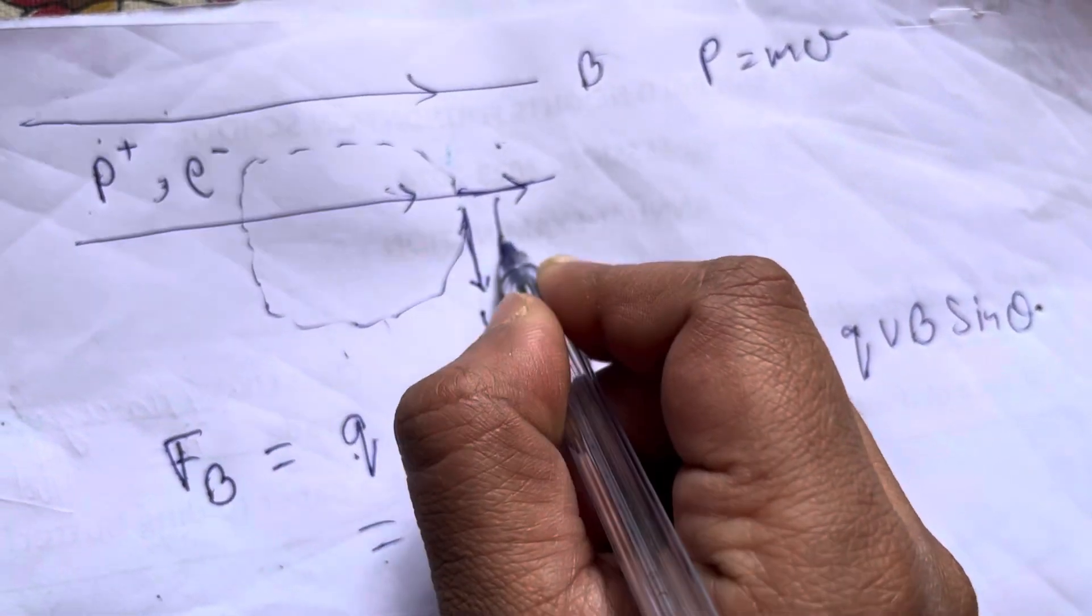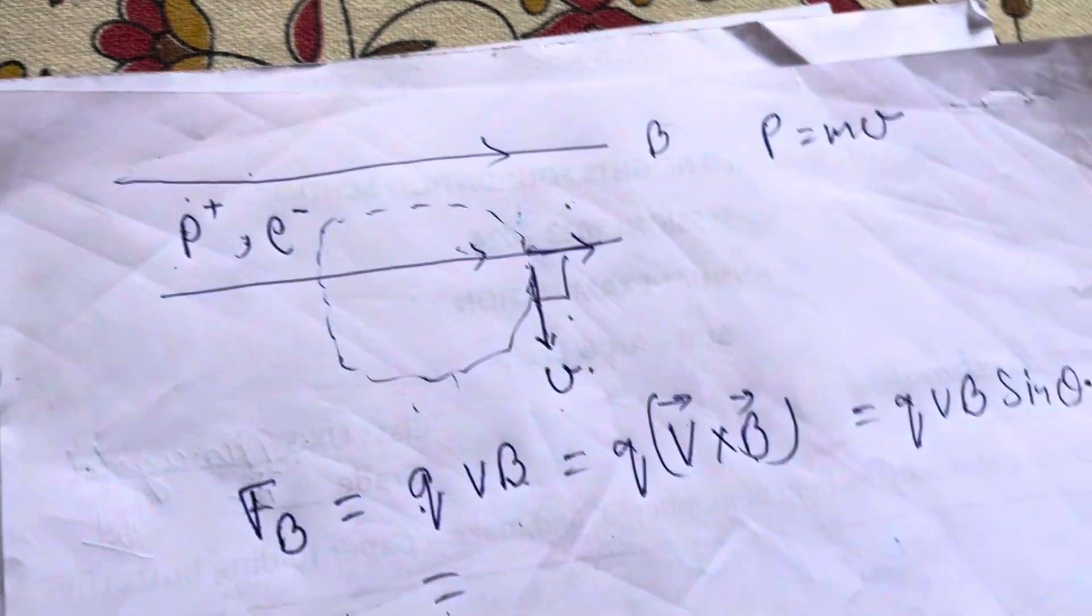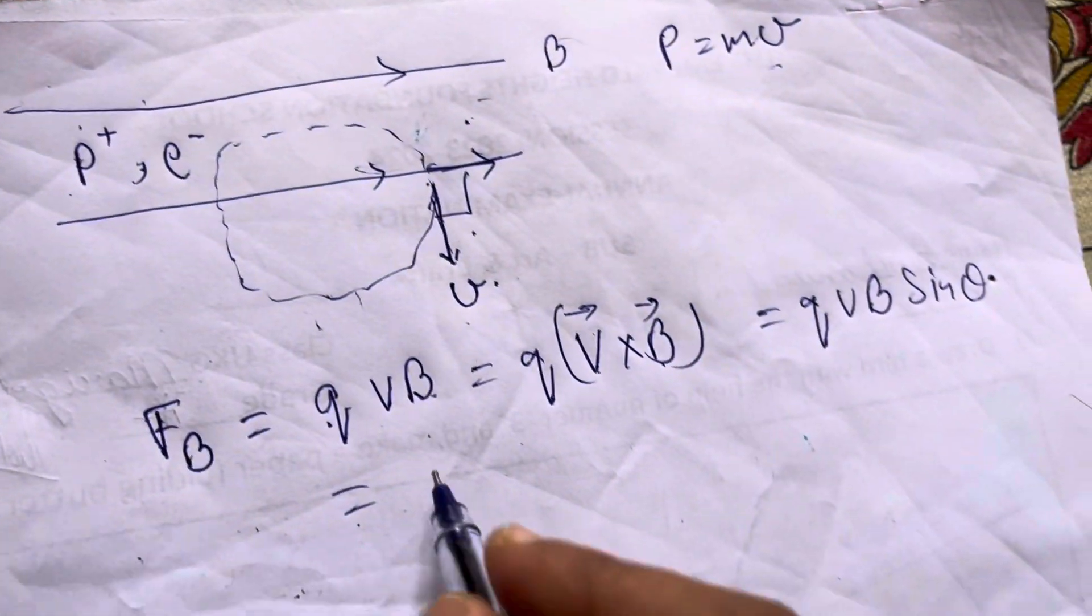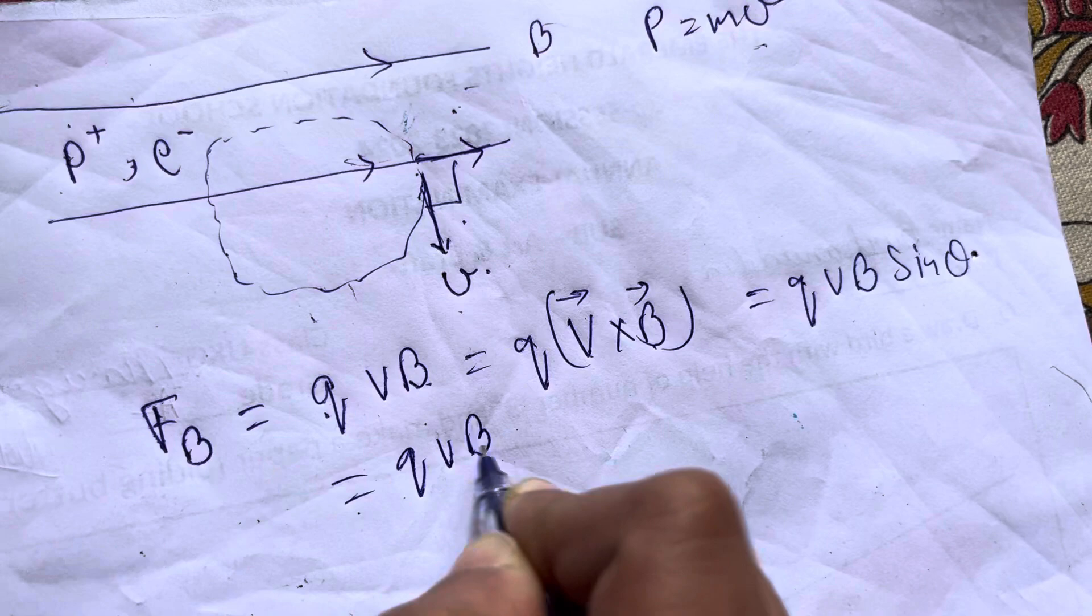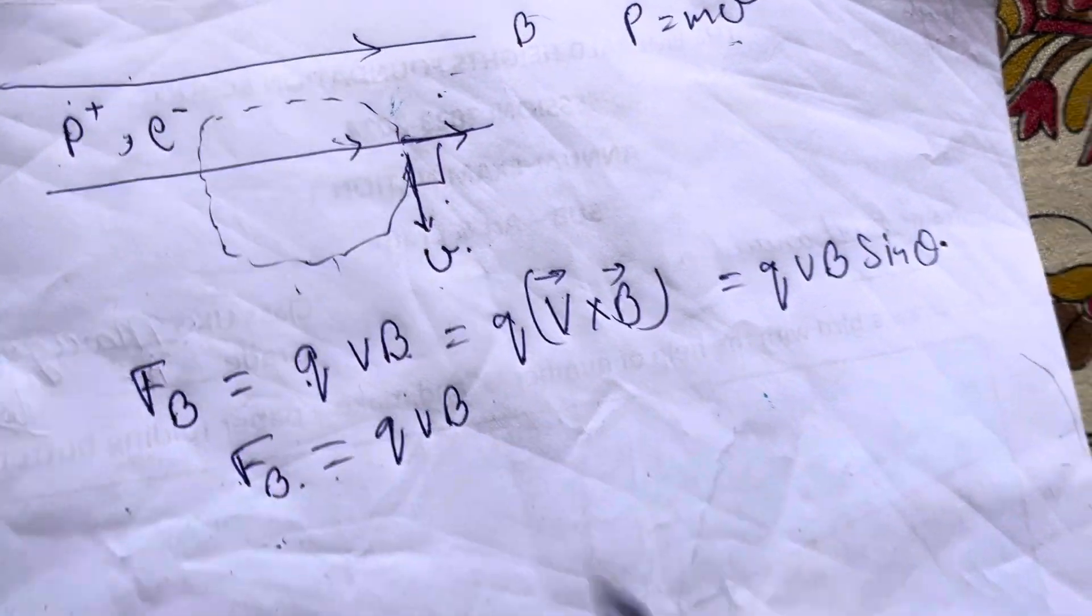How much angle is between V and B? 90 degrees, because the question says they are perpendicular to each other. Then the formula becomes Q V B.